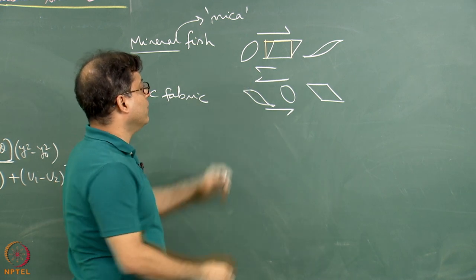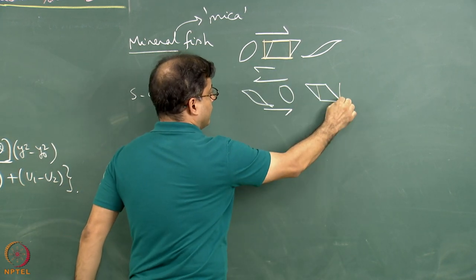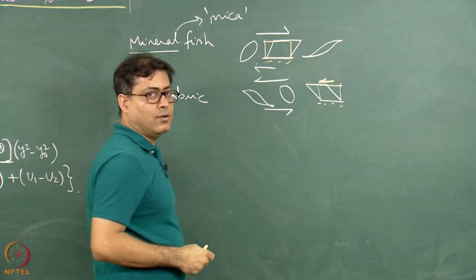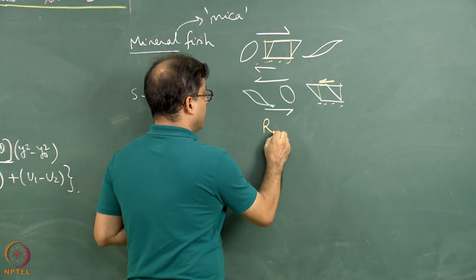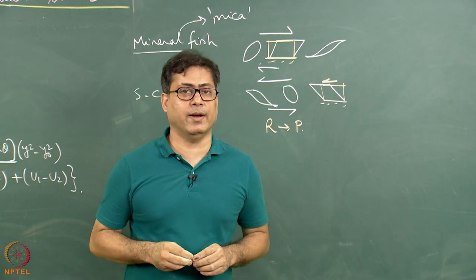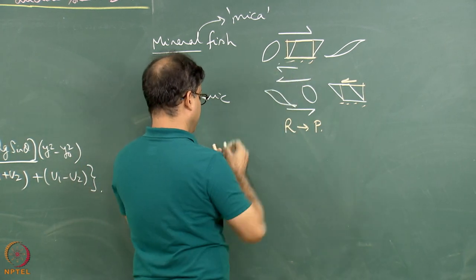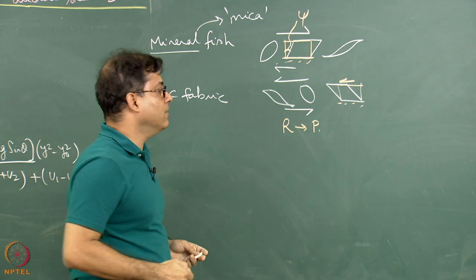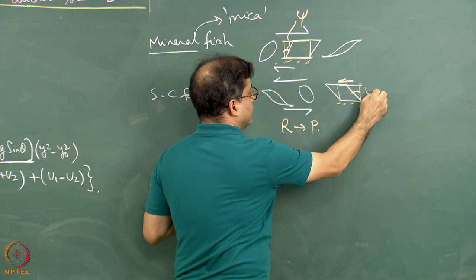So it is easy to understand that this parallelogram geometry of the mica grain has been produced from this kind of shear. The mental model is that this orange rectangle is like the starting position, and then we applied a shear keeping the bottom boundary static — though we never know which boundary is actually slipping. So from the rectangle, a parallelogram is produced.